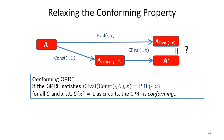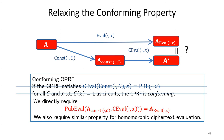Since Davidsson et al.'s CPRF is not conforming, we relax the conforming property. Recall that what we really want was not equality of the two circuits. Rather, we want that two matrices obtained by the homomorphic evaluation to be equal. So we relax the conforming property so that we directly require the equality of the matrices rather than the circuits.